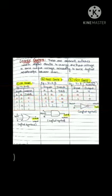Logic gates are electronic switches used in digital circuits to change the input voltage to some output voltage according to some logical relationships between them. There are five types of logic gates: OR gate, AND gate, NOT gate, NAND gate, and NOR gate.